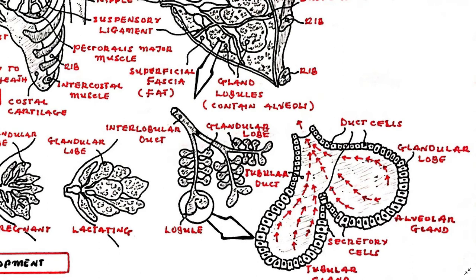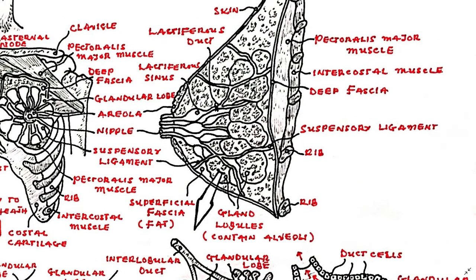The interlobular ducts converge to form as many as 20 lactiferous ducts, which dilate to form lactiferous sinuses and then narrow again within the nipple. These sinuses function as milk reservoirs during lactation. The nipple consists of pigmented skin with smooth muscle fibers set in fibrous tissue; erection of the nipple may enhance flow of milk through the ducts. The areola is highly pigmented and contains sebaceous glands that may act as a skin lubricant during nursing.